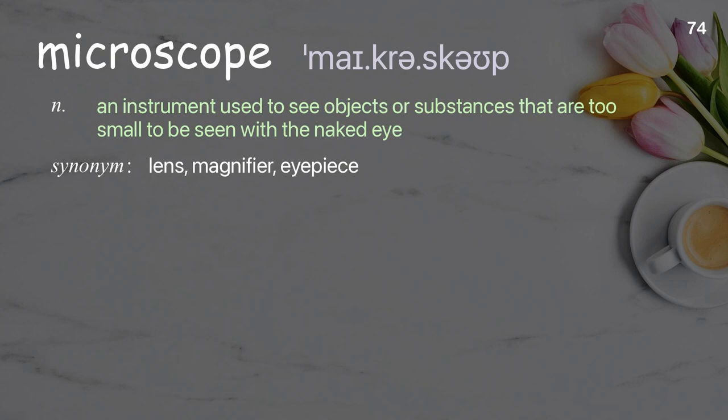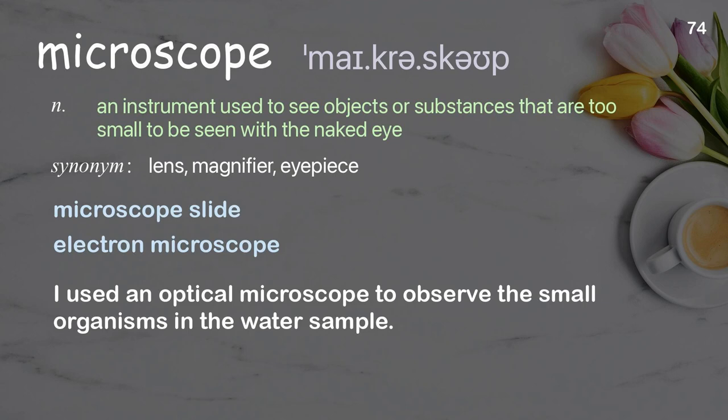Microscope: an instrument used to see objects or substances that are too small to be seen with the naked eye. Examples: microscope slide, electron microscope. I used an optical microscope to observe the small organisms in the water sample.